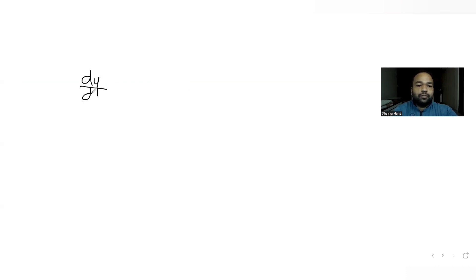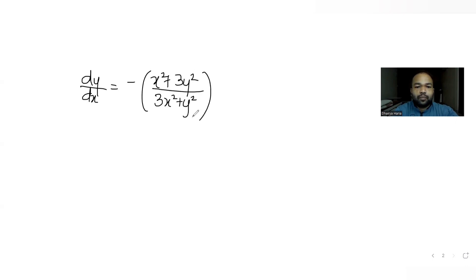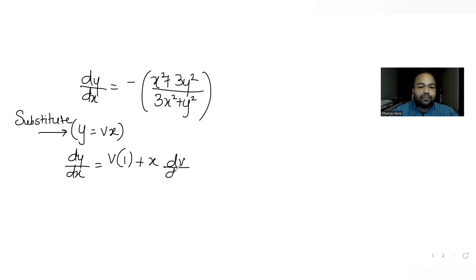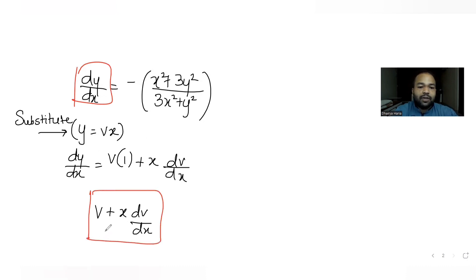First, I write that differential equation. Now I can substitute y = vx. Using this substitution, dy/dx becomes v·(derivative of x, which is 1) + x·(dv/dx), giving us v + x·dv/dx. So we are writing dy/dx as v + x·dv/dx.